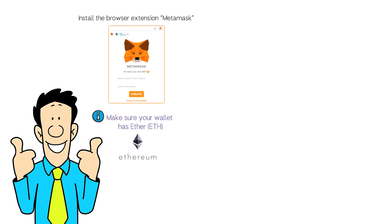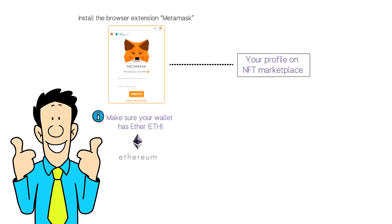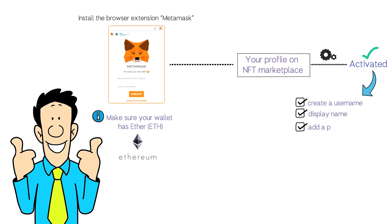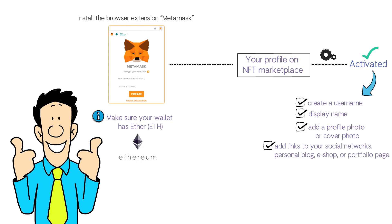After that, you are ready to create your first NFT. Connect your wallet to the NFT marketplace. Your profile on any Ethereum-based NFT marketplace — OpenSea, Rarible, Nifty Gateway, Foundation, or SuperRare — will be activated as soon as you connect your MetaMask wallet. From there, you can create a username or display name, add a profile photo or cover photo of your collection, and add links to your social networks, personal blog, eShop, or portfolio page.